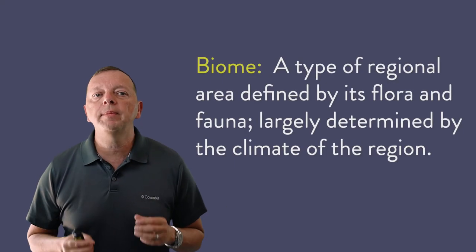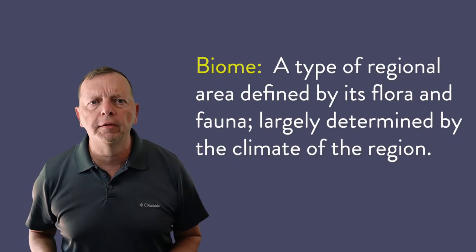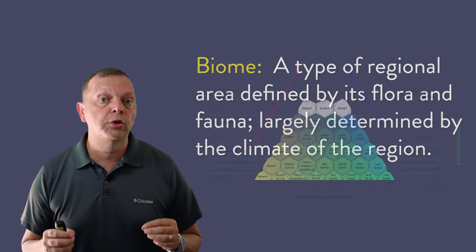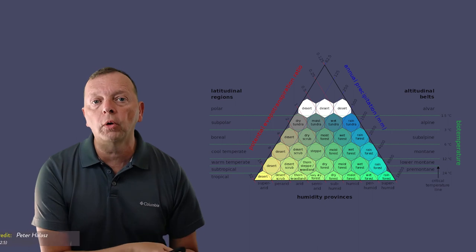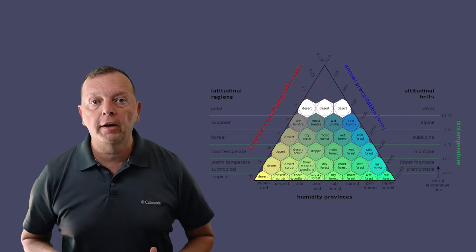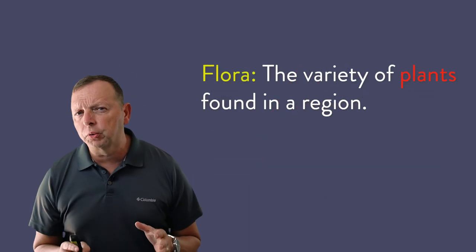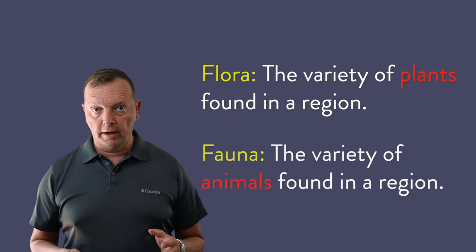In this lesson, what we're going to do is look at the Earth's biomes. What is a biome? Biomes describe the ecosystem of an area that is tied to the different climates. It's the temperature and the precipitation that each region receives that actually determines the flora and the fauna of these different regions. Flora is the plants and trees found in the area, and fauna are the animals found in the area.